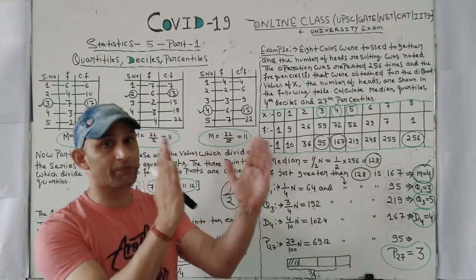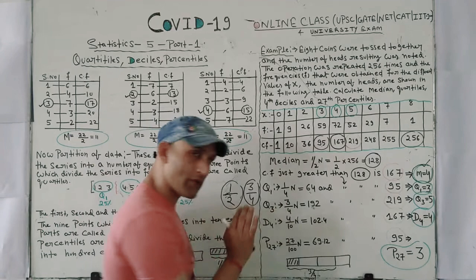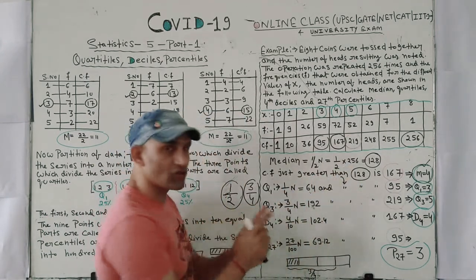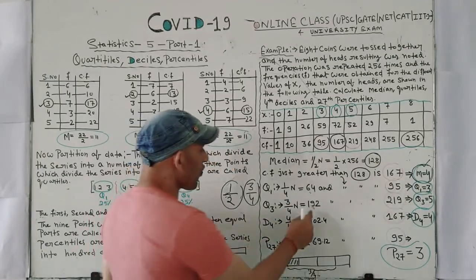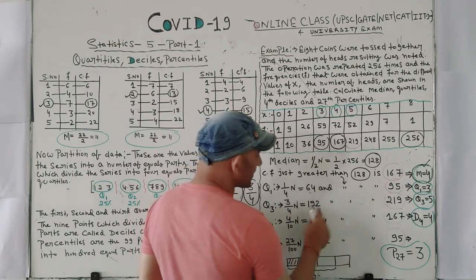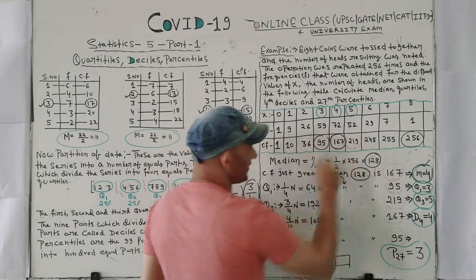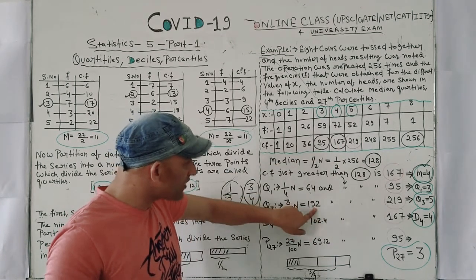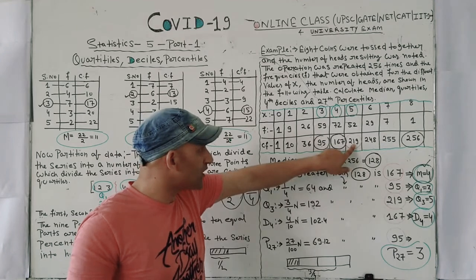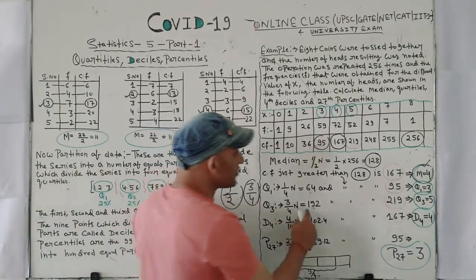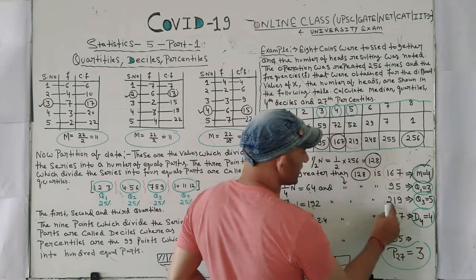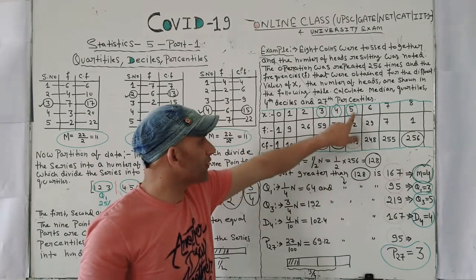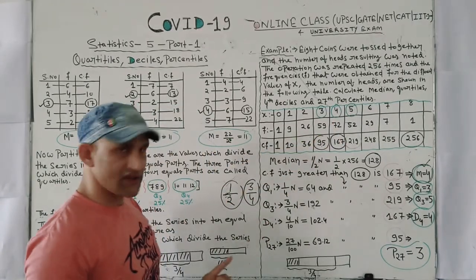For Q3: Q3 = (3/4) × n = (3/4) × 256 = 192. Find the cumulative frequency just greater than 192 — that is 219. Since 167 is less than 192 and 219 is greater than 192, the value 219 holds 192. So Q3 = 5.